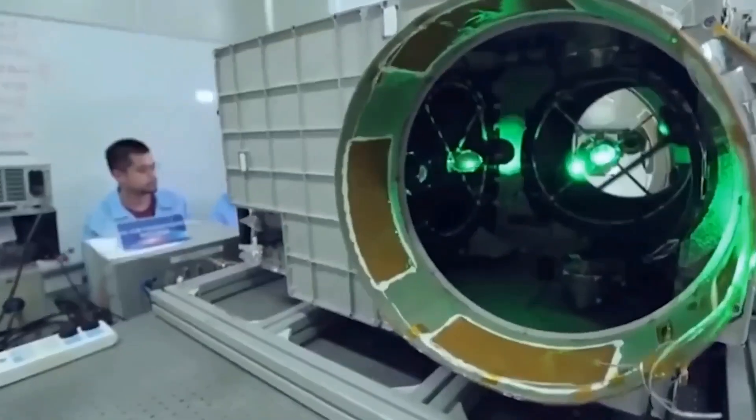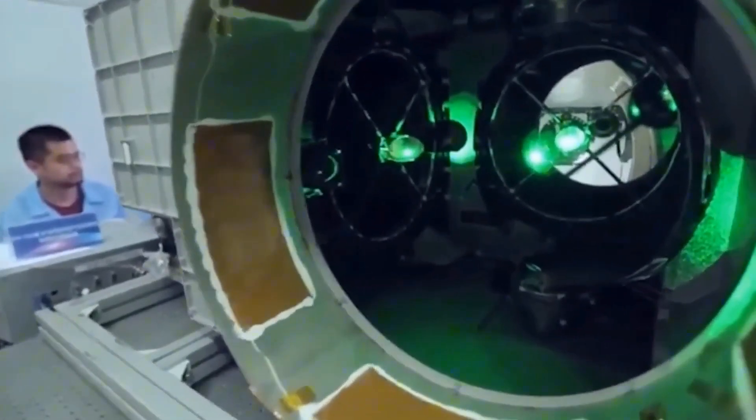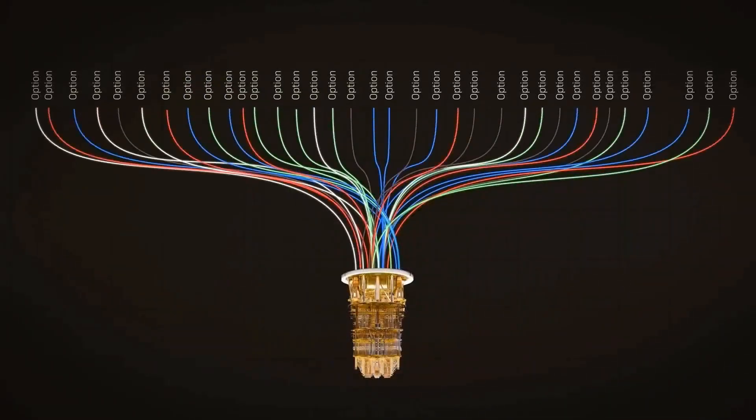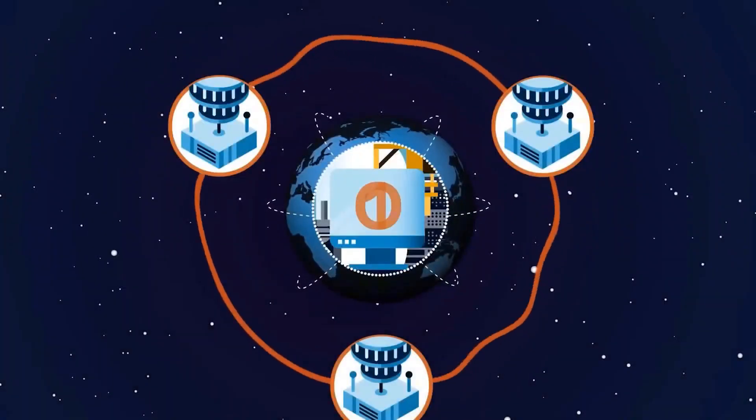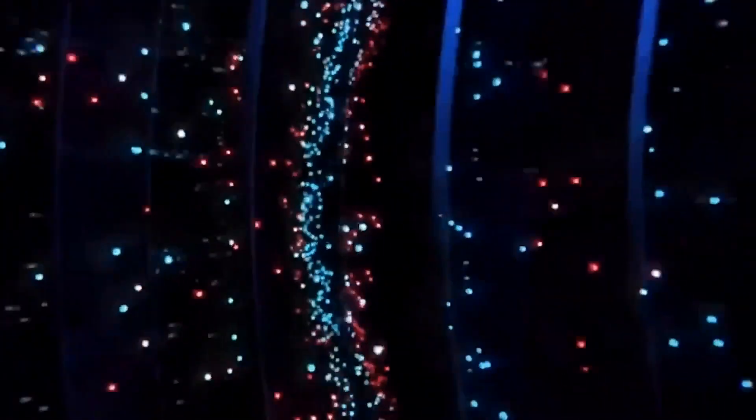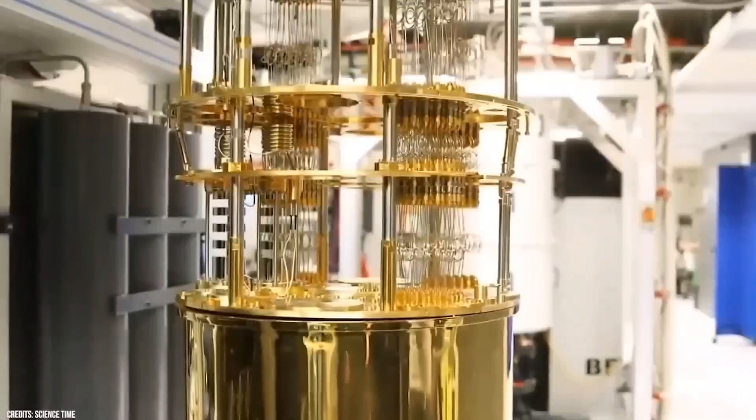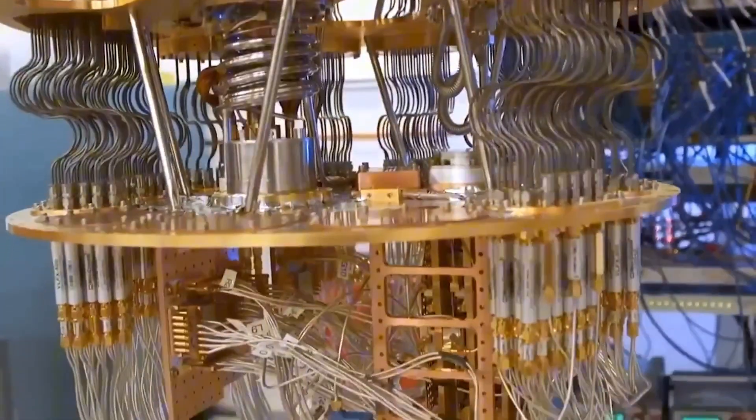Entanglement. The quantum connection. Another key principle is entanglement, a phenomenon in which particles become intricately connected, regardless of distance. If two qubits become entangled, the state of one qubit instantly influences the state of the other, regardless of the physical separation between them.